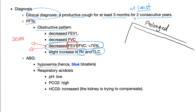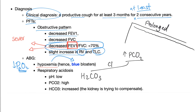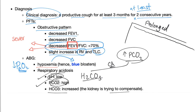ABG arterial blood gas: you'll find hypoxemia — decreased PaO2, the partial pressure of arterial oxygen. That's why they're called blue bloaters — they're hypoxemic and cyanotic. There is respiratory acidosis: CO2 trapped in alveoli leads to H2CO3 via carbonic anhydrase, and H2CO3 is an acid. pH is low, PCO2 is high. The kidneys compensate by increasing bicarbonate HCO3 to cause a metabolic alkalosis.